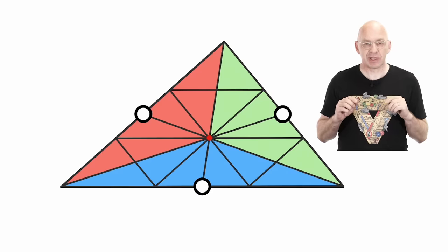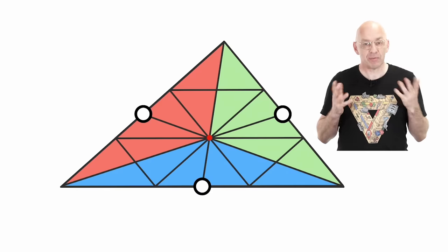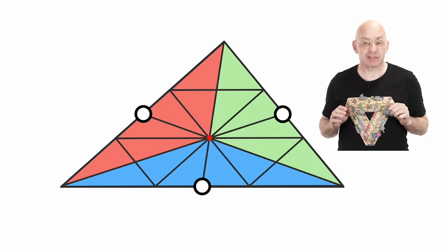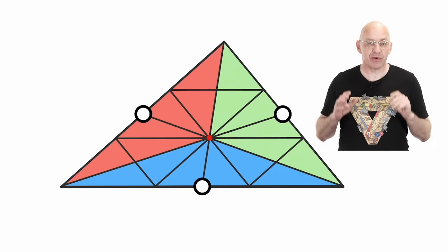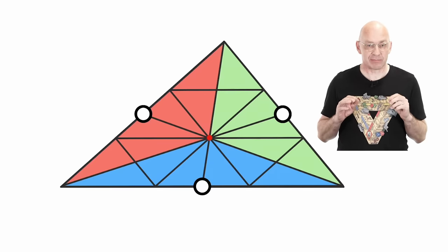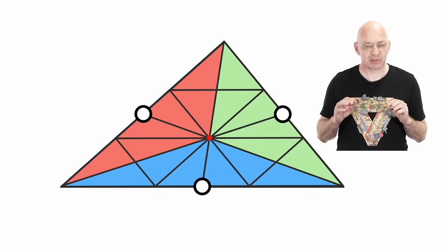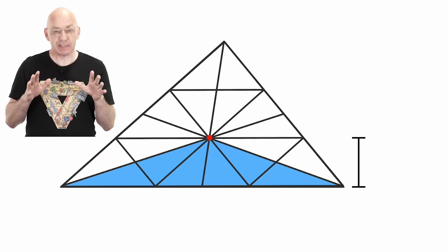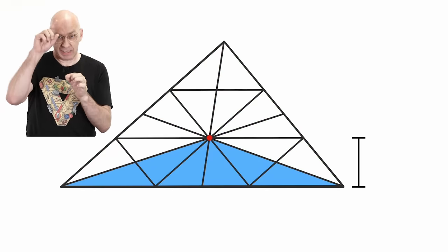If these three parts really all fold up to the same triangle, then obviously all three parts, red, green and blue, have to have the same area. Exactly one third of the area of the original triangle. Let's first see why that is true. It's really easy.